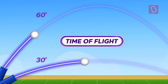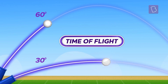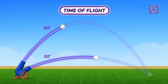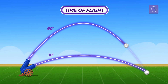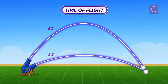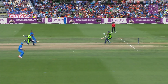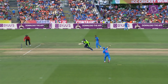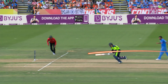Time of flight. The flatter throw — one with a smaller angle — lands first, as compared to the one with a higher angle, or a more loopy throw, which stays in the air longer. So, when a batter is sprinting for quick runs, time is of the essence, and the fielder chooses a flatter throw.